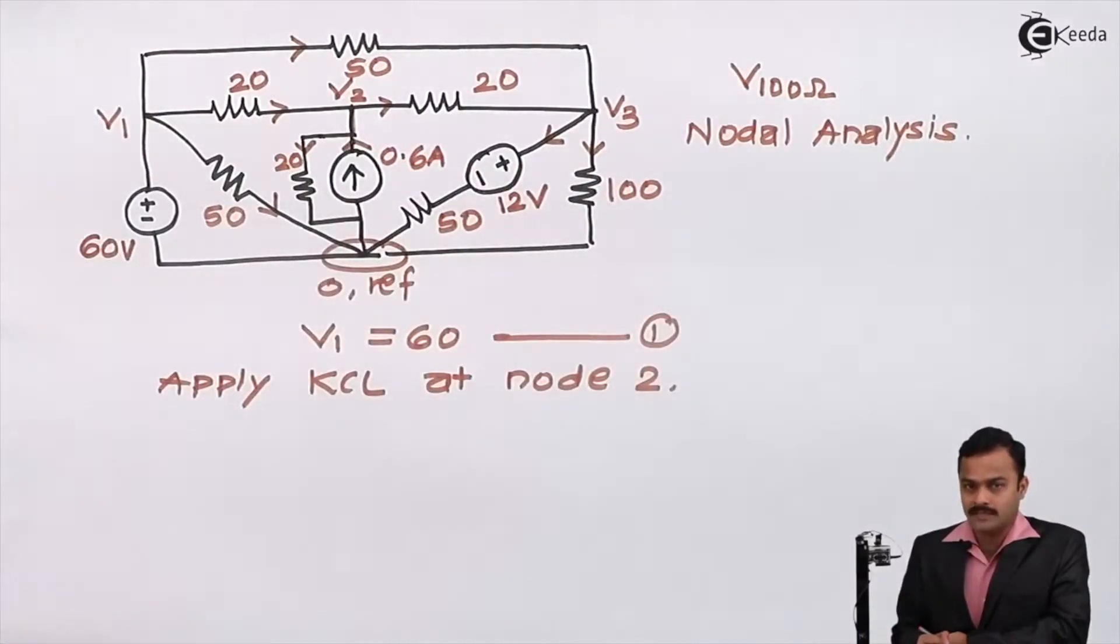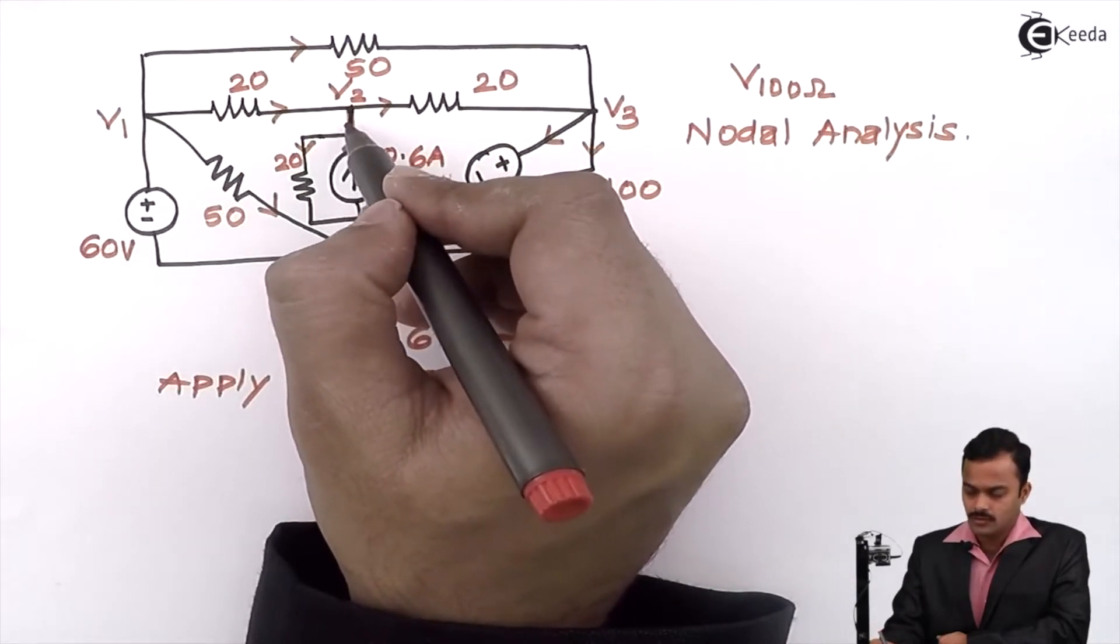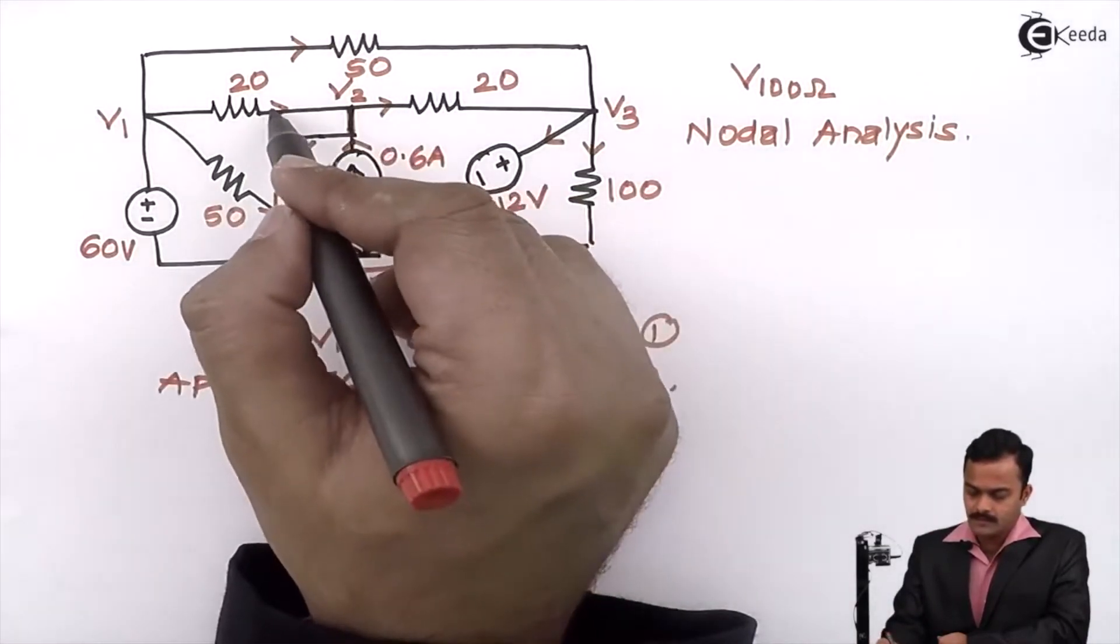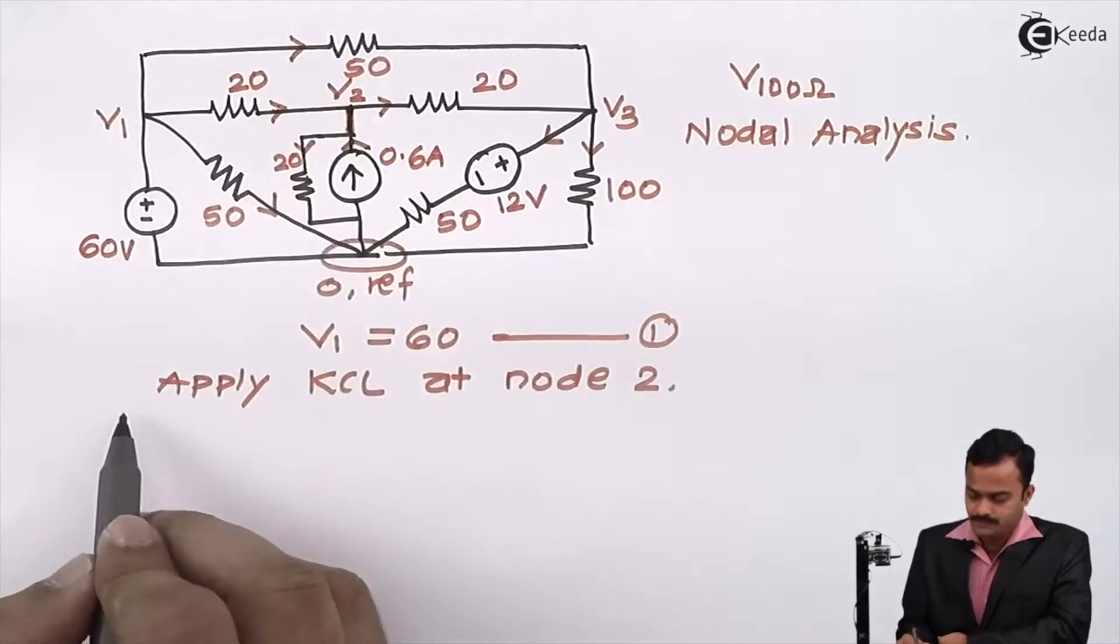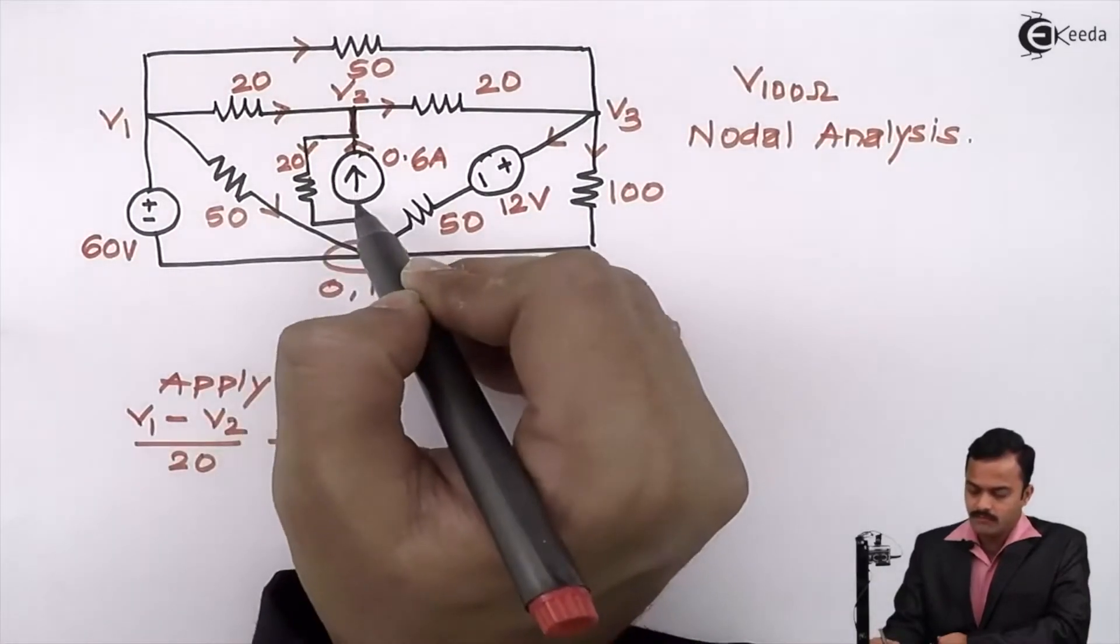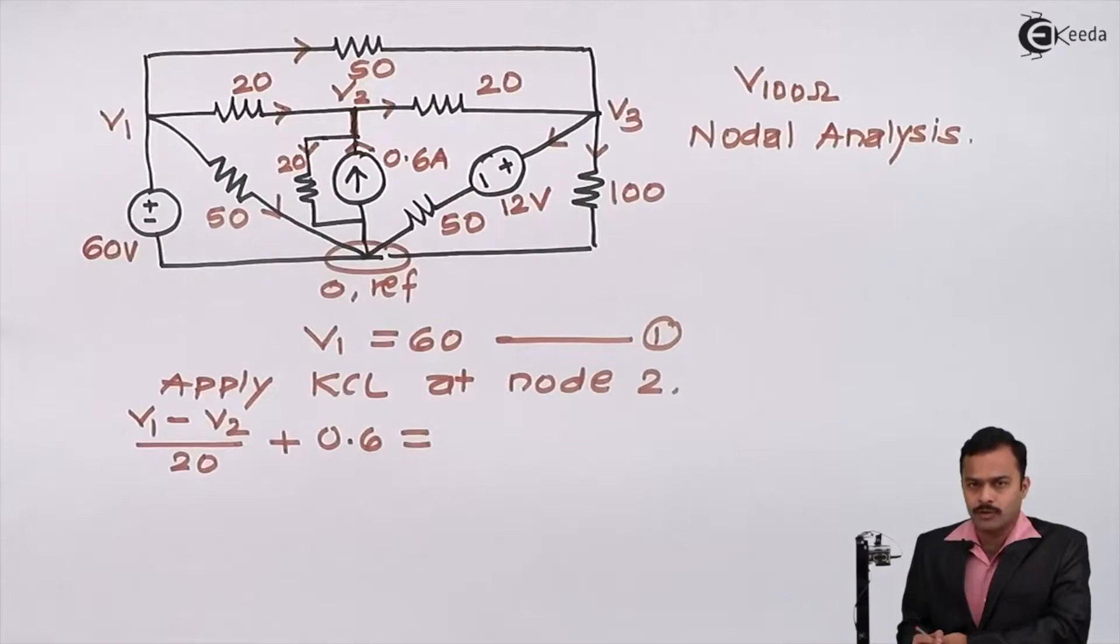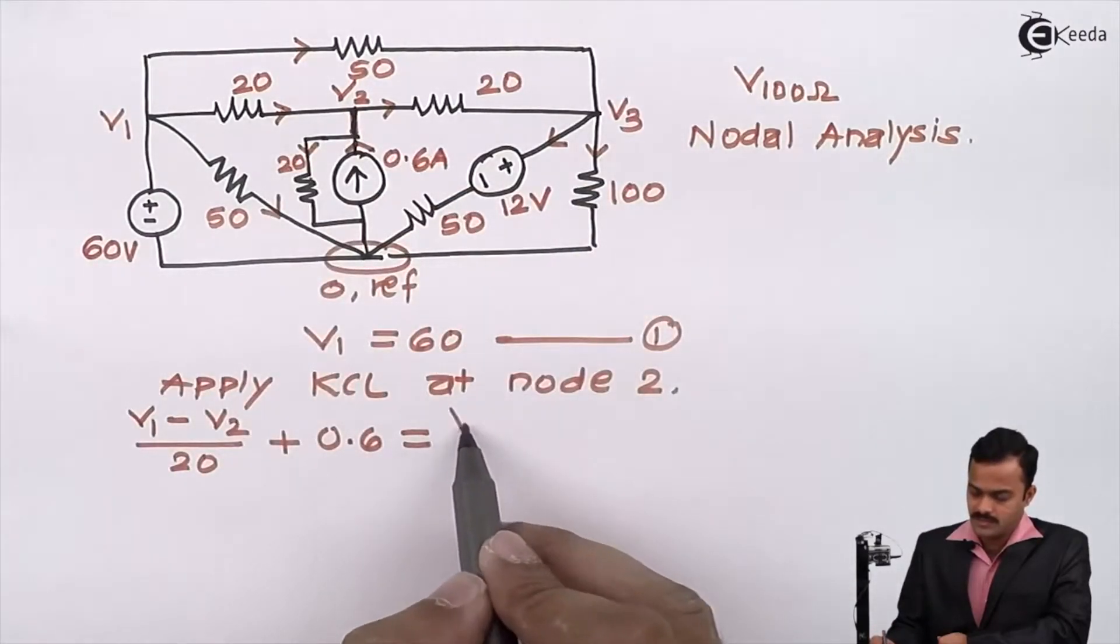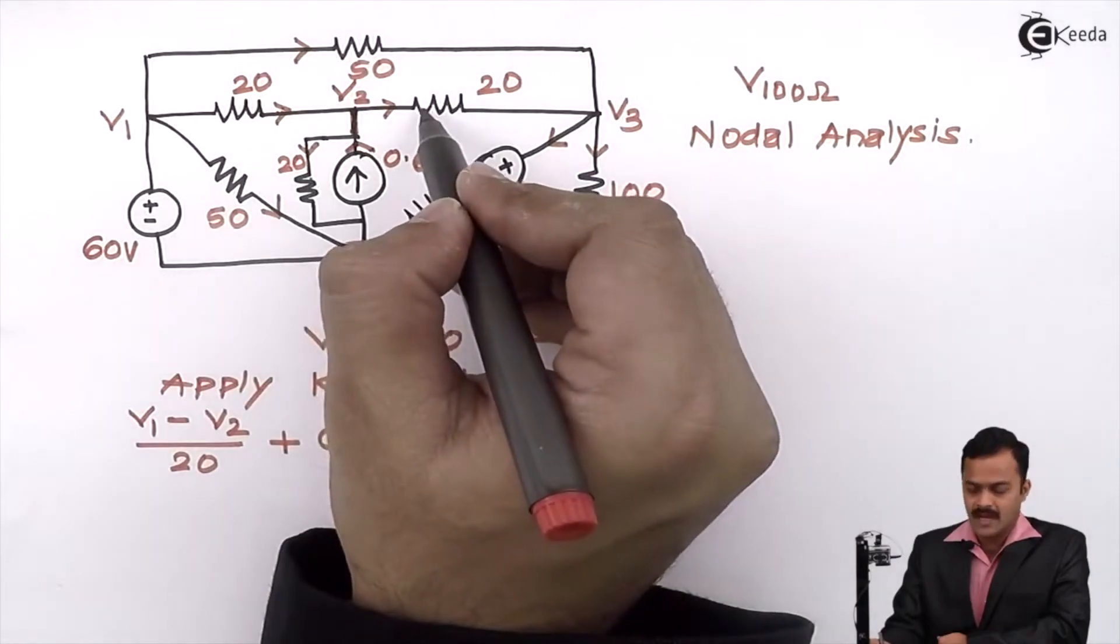At node two, let's count how many branches are there. This entire thing is a stretch node, so for this node I am having four branches connected. Out of that, these two are incoming currents and remaining two are outgoing currents. For this 20 ohm, the term will be V1 minus V2 divided by 20, plus one more incoming current, 0.6 ampere current source directly given, so I can write plus 0.6 equal to outgoing currents. For this branch, V2 minus 0 divided by 20, plus for this branch current started at 2 ending on 3, V2 minus V3 divided by 20.